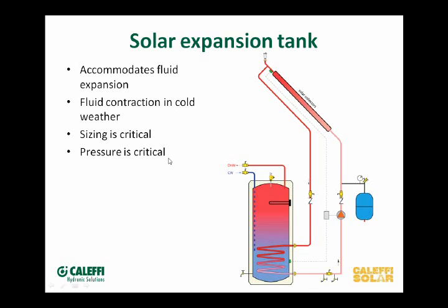If you're going to fill your system up to 60 pounds, you have to take the cap off the expansion tank and pre-charge it to that same pressure. Our Calafi solar tanks come with about 70 pounds of pre-charge already in them because they're made in Europe assuming systems will be pumped up to 60 pounds. They come filled with nitrogen, not just air, so it doesn't permeate through the EPDM bladders like oxygen will. By coming with that high pre-charge, you can just bump it down to 60 pounds instead of having to add nitrogen.